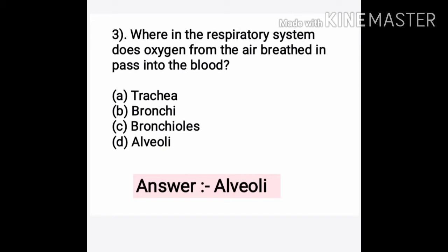Question number three: Where in the respiratory system does oxygen from air breathed in pass into the blood? Options: A. Trachea, B. Bronchi, C. Bronchiols, D. Alveoli. The correct answer is D. Alveoli — that is the place where exchange of gases takes place and oxygen passes into the blood.